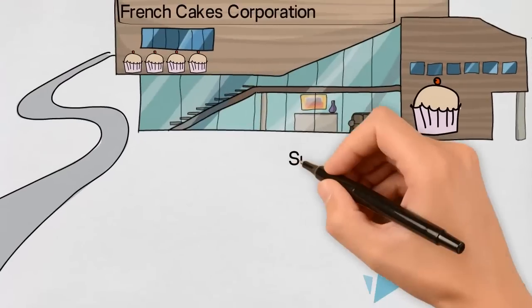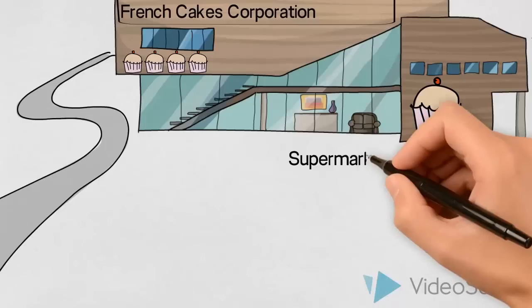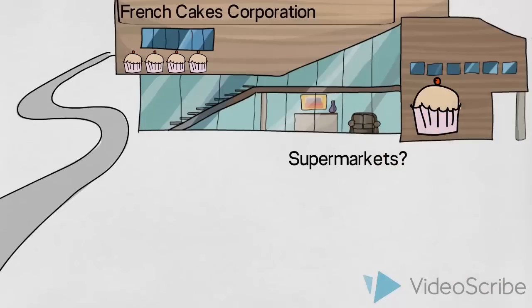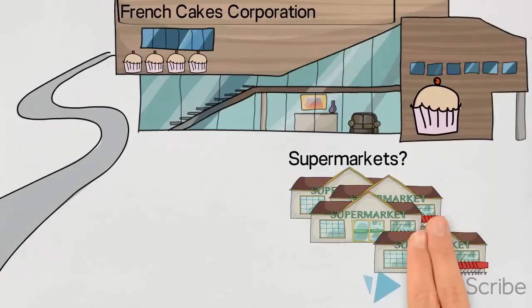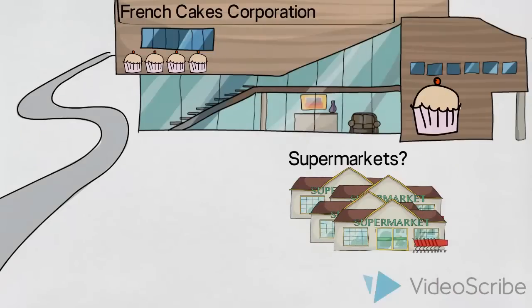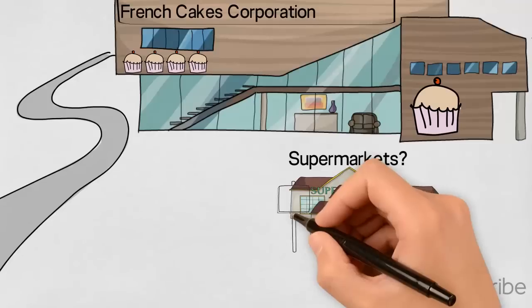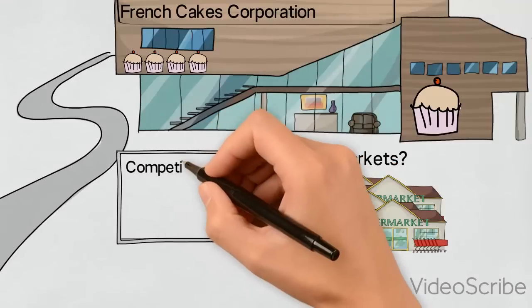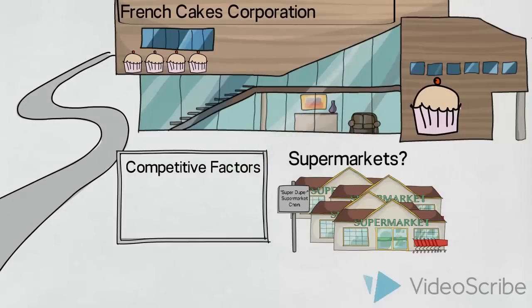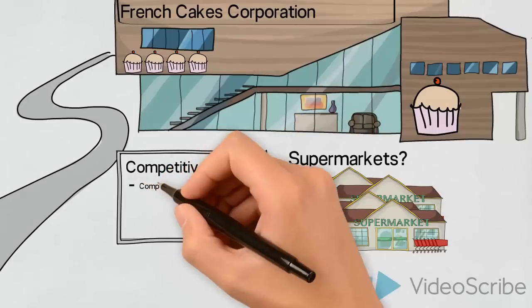We might also imagine that the company is keen on distributing their products through supermarkets, in order to reach a large number of people from their target group in this way. In addition to the previously discussed factors, we would also ask them to consider some facts about their competitors. Firstly, which channels are their competitors using?